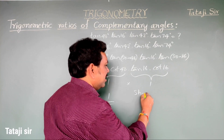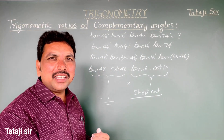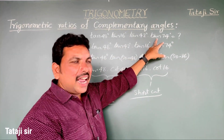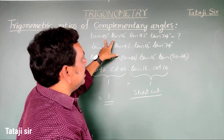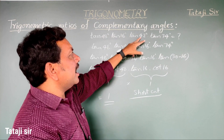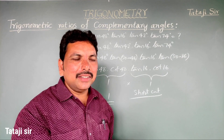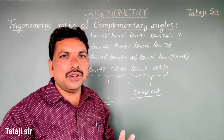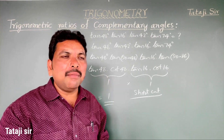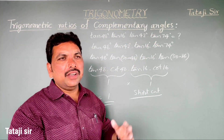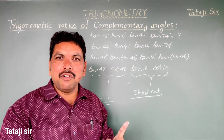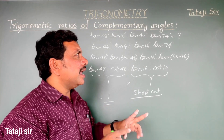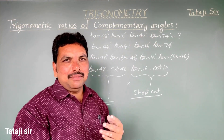Shortcut: when all trigonometric ratios are the same (e.g., all tan), and the angles pair up to give 90 degrees, their product equals 1. The number of trigonometric ratios must be an even number — such as 2, 4, or 6 — for the product to be 1.